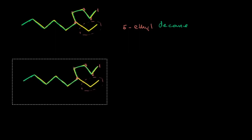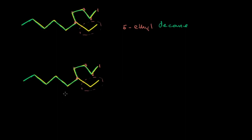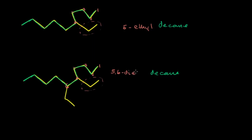Now I'm going to attach one more ethyl group to make the structure more complex, and we will give the name of this compound. I attach one more ethyl group — I'm not going to change the longest carbon chain, which is still decane. On the fifth carbon there is ethyl, and now on the sixth carbon there is also ethyl. So how do we write it? On the fifth carbon there is ethyl and on the sixth carbon there is ethyl. The name is: five-comma-six (numbers separated by comma), hyphen, 'di' because there are two ethyl groups — 5,6-diethyldecane. This is the name of the given compound.